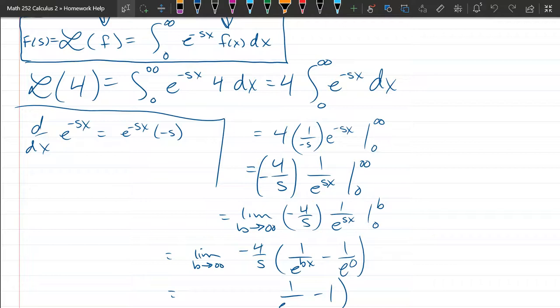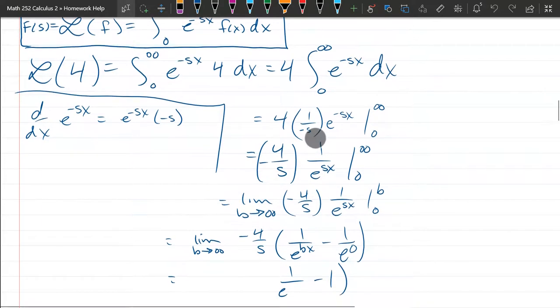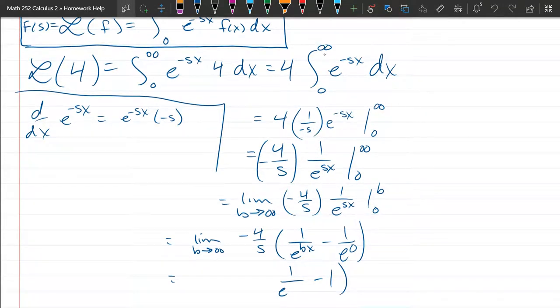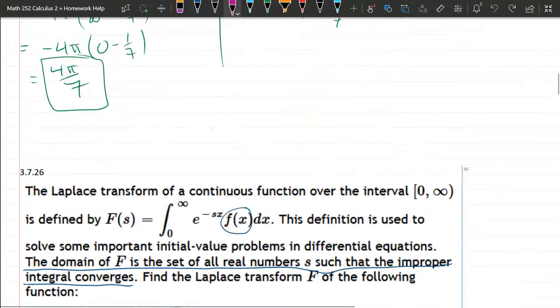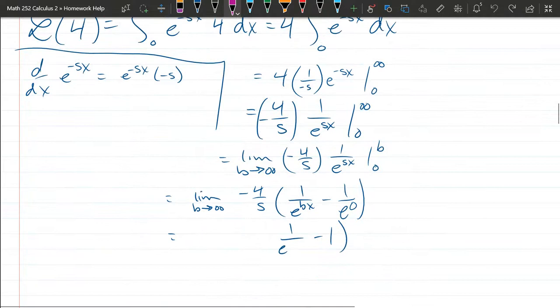So where did I make that mistake? This is a limit, you're plugging this in for the x variable. Oh no, what happened? So you're plugging it in for the x variable and I plugged it in for the s variable. So this should be e to the sb, or e to the - and when we plug it in, s times infinity.